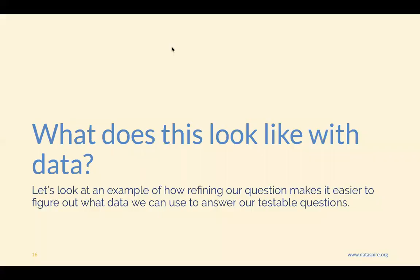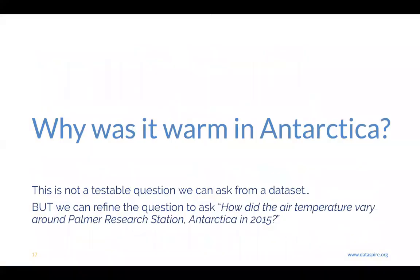So what does this actually look like when we have data? Let's look at an example of how refining our question makes it easier to figure out what data we should use to answer our testable question. A question could be: 'Why was it warm in Antarctica?' This isn't a testable question — it doesn't meet any of the metrics we've talked about. But we could refine it to: 'How did the air temperature vary around Palmer Research Station, Antarctica in 2015?' In this revision we've become more specific — we're interested in air temperature, how it varies, at one specific place in Antarctica, in a specific year. Now that we have this testable question, we can look at our data to make sure we actually have data to answer it.